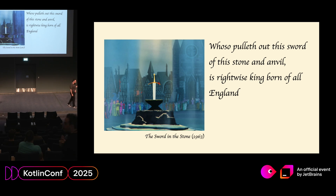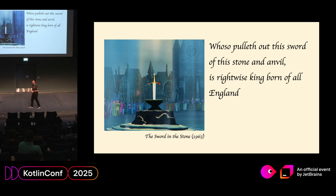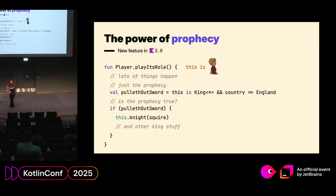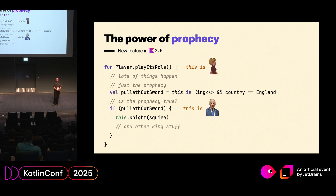For my next example, I will go back to my childhood. I really like the movie 'The Sword in the Stone' — the Merlin movie where Arthur is a small lad. We're going to use the power of prophecy, something which actually came new in Kotlin 2.0. At the beginning, Arthur is just a squire — the child taking care of all the chores of the palace. But somehow, the moment he pulled the sword, he turns into the king of England.